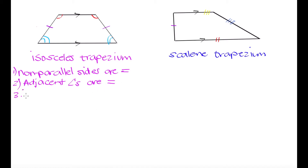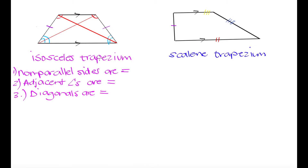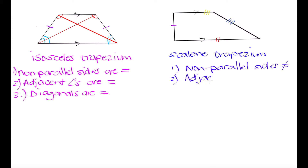The third property of an isosceles trapezium is that the diagonals are equal. If we put in two diagonals, this first diagonal and this second diagonal are going to be congruent — they are equal in length. In a scalene trapezium, by contrast, the non-parallel sides are not equal, the adjacent angles are not equal, and the diagonals are not equal.